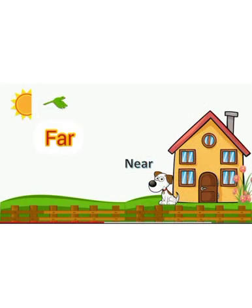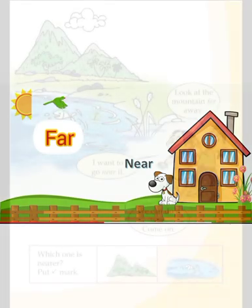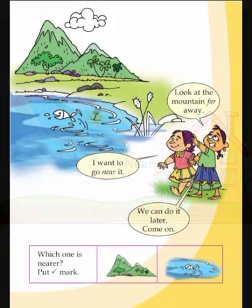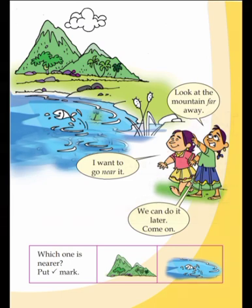Children, we already learnt about the concept of near and far. Look, it's from our textbook. Tara and Meenu are now at a pond. Look at the mountain far away — Tara wants to go near the mountain. Now put a tick mark on which one is nearer — is it the mountain or the pond which is near to them?